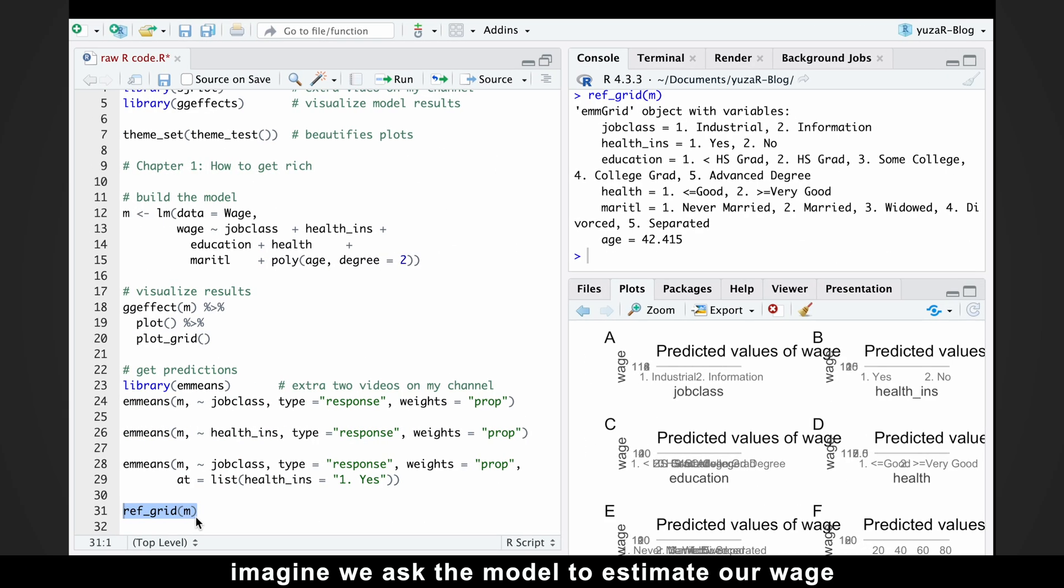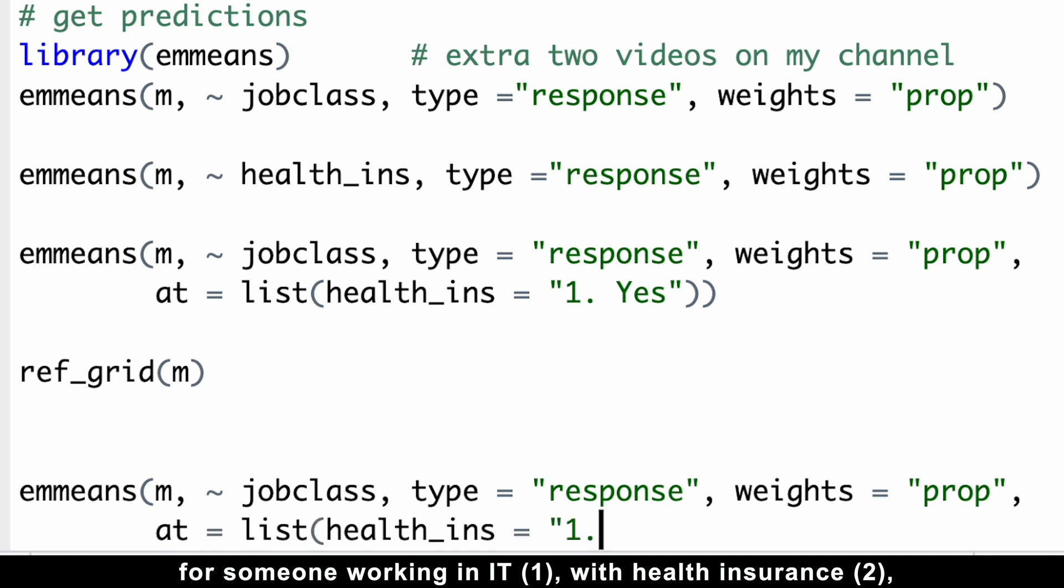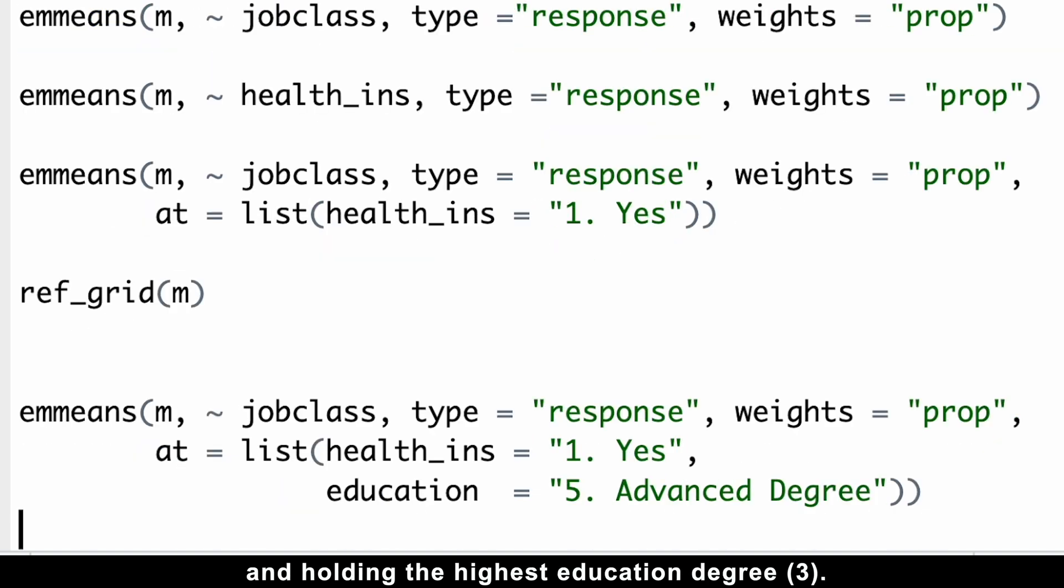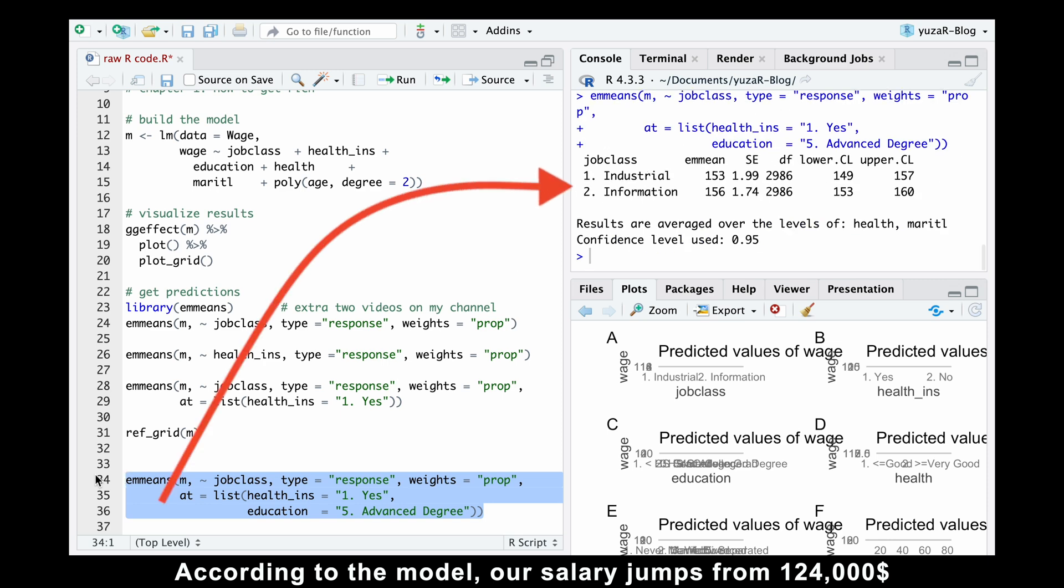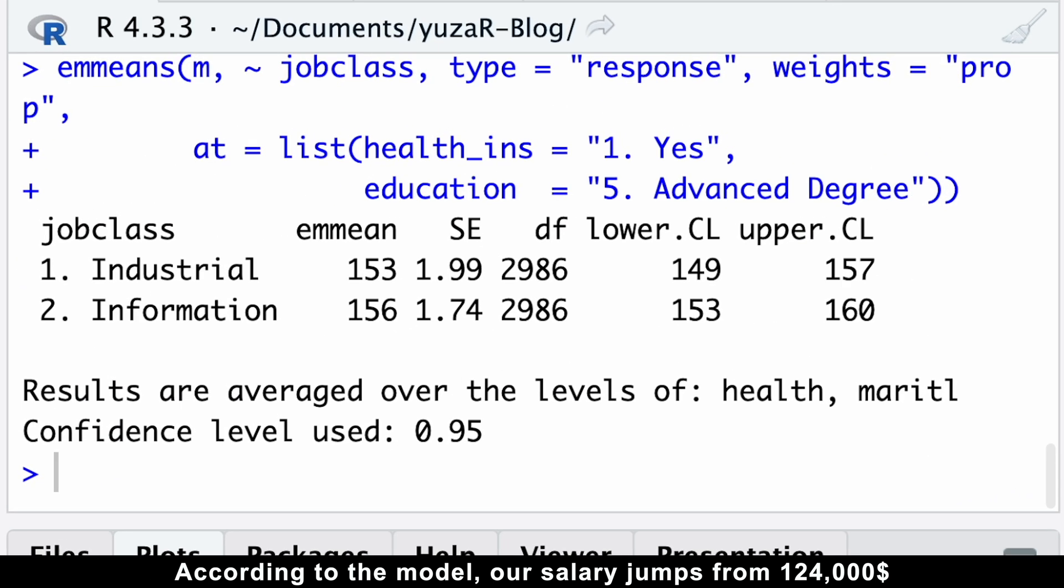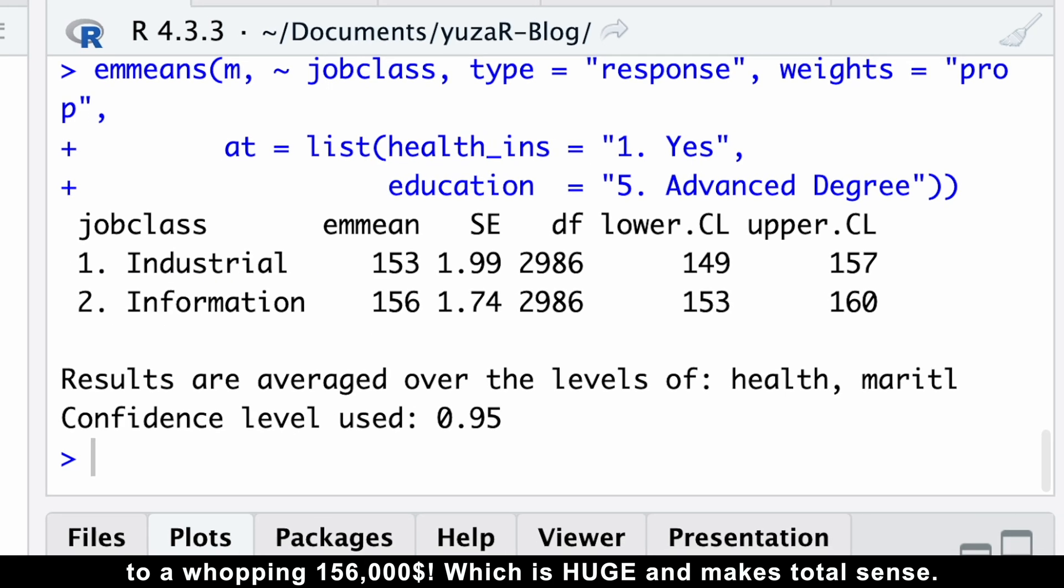For example, imagine we ask the model to estimate our wage for someone working in IT with health insurance and holding the highest education degree. According to the model, our salary jumps from $124,000 to a whopping $156,000, which is huge and makes total sense.